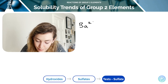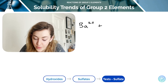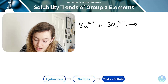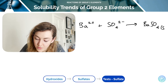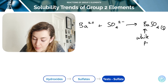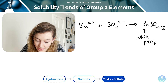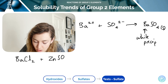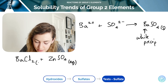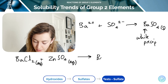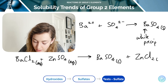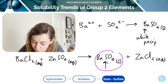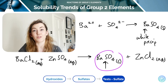When barium ions are added to a solution containing sulfate ions, barium sulfate forms as a white precipitate — a positive test result. For example, adding barium chloride to aqueous zinc sulfate causes the ions to separate; barium sulfate precipitates as a solid, and the zinc salt remains in solution. The white precipitate confirms the presence of sulfate ions.